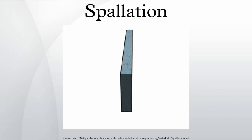Nucleus spallation — see also cosmic ray spallation. Nucleus spallation occurs naturally in Earth's atmosphere owing to the impacts of cosmic rays, and also on the surfaces of bodies in space such as meteorites and the Moon.